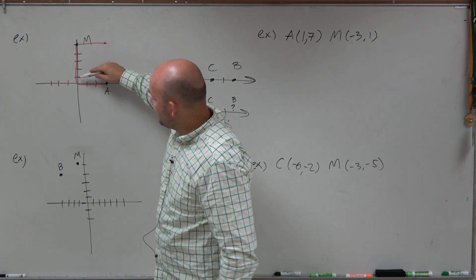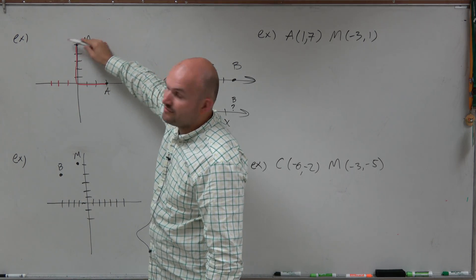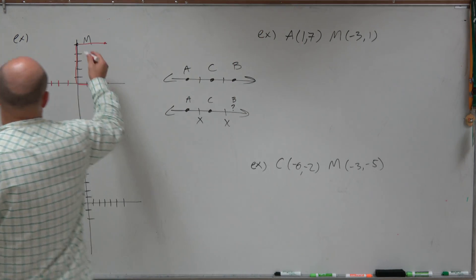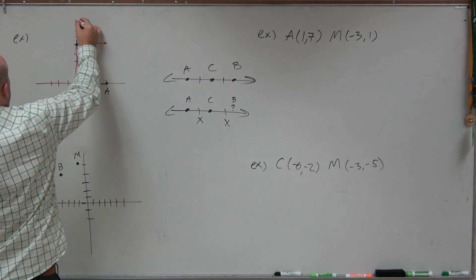Then from A to M, I had to travel vertically 1, 2, 3, 4, 5. So therefore, if I need to get to my other endpoint, I'm going to have to travel another 5. So 1, 2, 3, 4, 5.